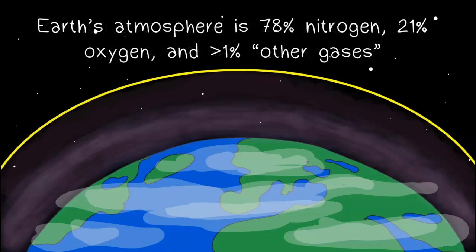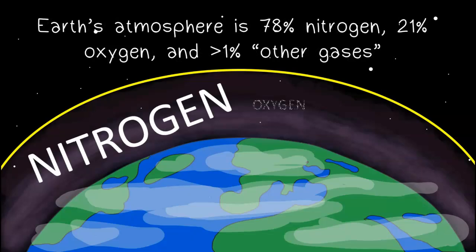Earth's atmosphere is about 78% nitrogen, 21% oxygen, and less than 1% of other gases.